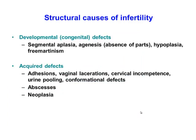Some of the structural causes of infertility can be congenitally acquired. These include things such as segmental aplasias, absence of parts or agenesis, hyperplasia, or the developmental condition known as free martinism. Other defects can be acquired and these can include a variety of things such as adhesions, lacerations, cervical incompetence, urine pooling, conformational defects, abscesses, and neoplasia.